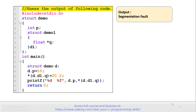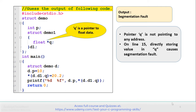Let's understand why we are getting a segmentation fault in this program. Note that q is a pointer to float data, so pointer q is not pointing to any address in this program. On line number 15 we are trying to directly store a value into q, which causes the segmentation fault.